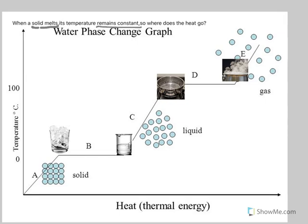The temperature starts at minus 4 degrees Celsius and we have some ice. As we keep supplying heat to this ice, the temperature rises from minus 4 degrees Celsius to 0 degrees Celsius. Now at 0 degrees Celsius, you continue heating the ice and something interesting happens.